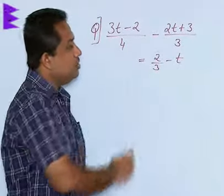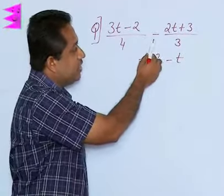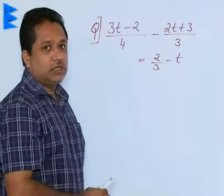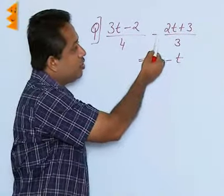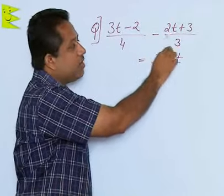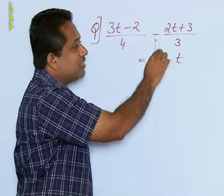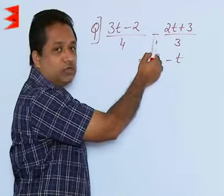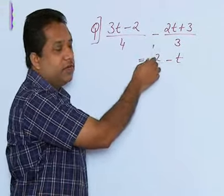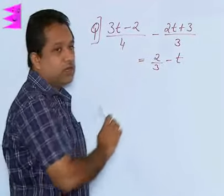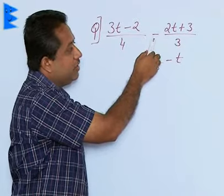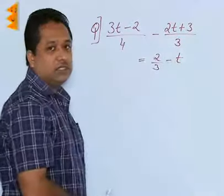Now, in this question you will have to be very careful because there is a negative sign outside this term, and this is where the maximum error occurs. This negative is not only for the 2t, it is also for the 3. You will have to be very careful in solving this because the signs will change when there is a negative sign outside. If it would have been a positive sign then it would have been easy - you could have taken the LCM and solved it. Here the negative sign is very crucial for this sum.